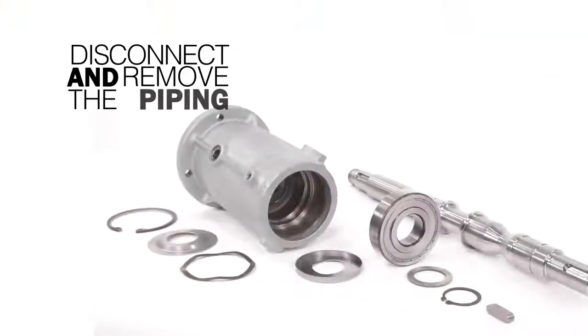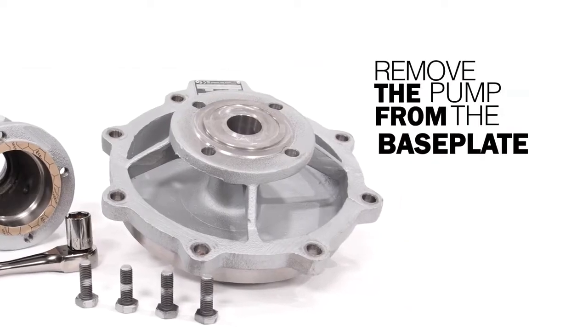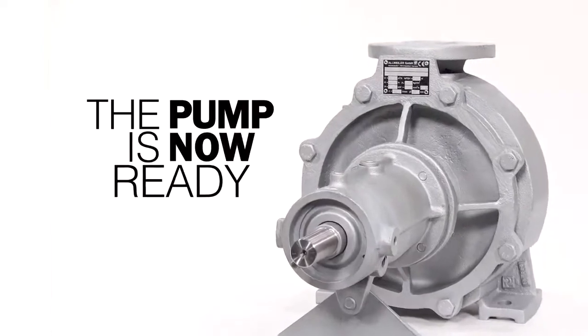Disconnect and remove the piping from the suction and discharge end of the pump. Remove the pump from the base plate and remove the shaft coupling. The NTT Series Pump is now ready for disassembly.